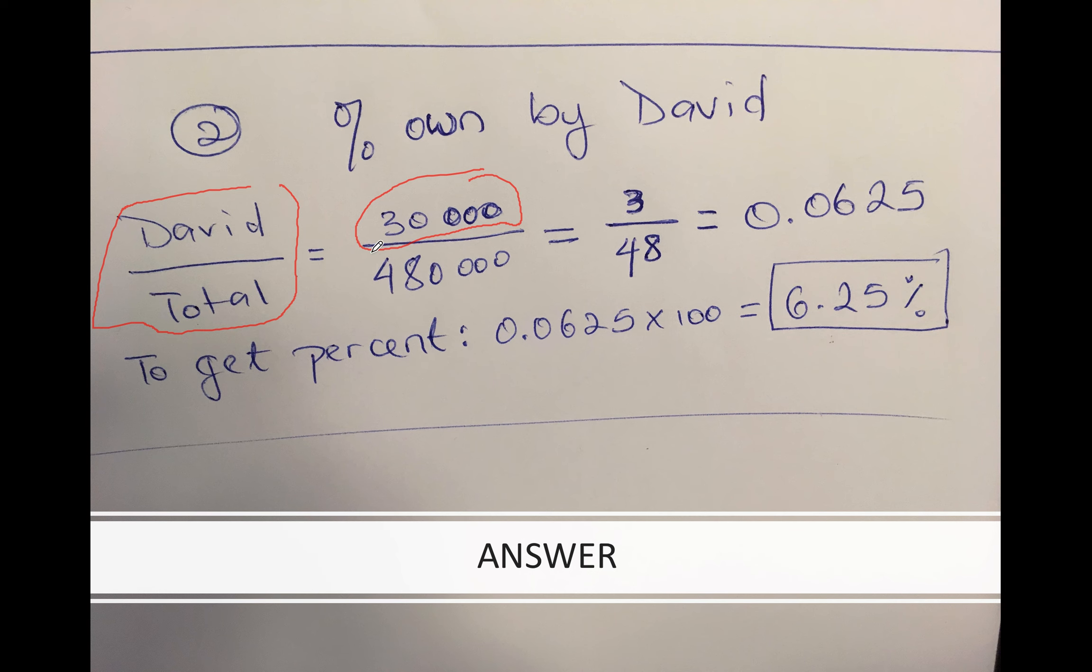That means that he only owns the amount of money that he puts in. So divide what he puts in by the total. You see how many zeros this has - four zeros. This has four zeros. You can just cross this out, cross that out. You're left with 3 over 48. Use your calculator to do this and that'll give you 0.0625.